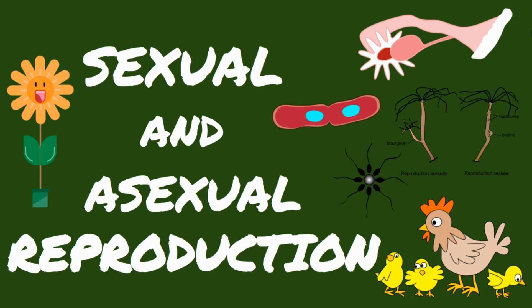Hi there! In this video lesson, we will be talking about the two types of reproduction in all living organisms: sexual and asexual reproduction.